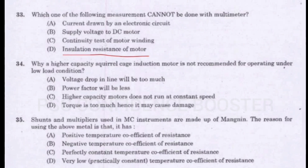Question number 34. Why is a higher capacity squirrel cage induction motor not recommended for operating under low load condition? Option A - Voltage drop in line will be too much. Option B - Power factor will be less. Option C - Higher capacity motors do not run at constant speed. Option D - Torque is too much, hence it may cause damage. Answer is Option B: Power factor will be less.